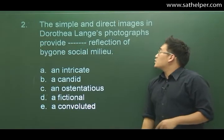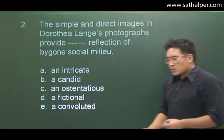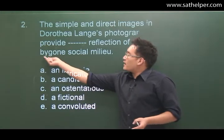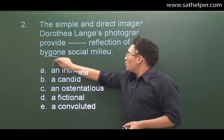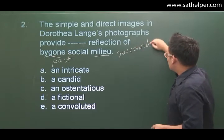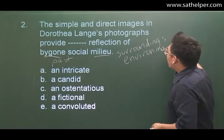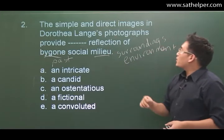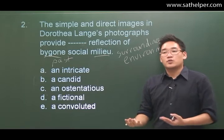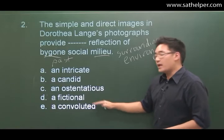Moving on to question number two. The simple and direct images in Dorothea Lange's photographs provide blank reflection of a bygone social milieu. This is a harder sentence with some good SAT words. Bygone means in the past, and milieu means surroundings or environment. The answer choices are: intricate, candid, ostentatious, fictional, and convoluted.